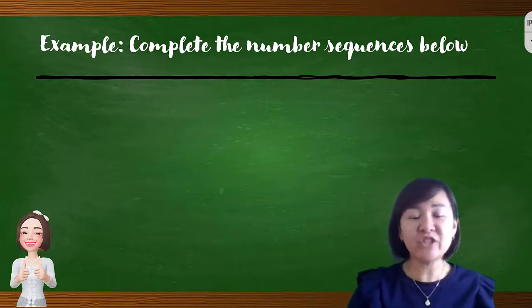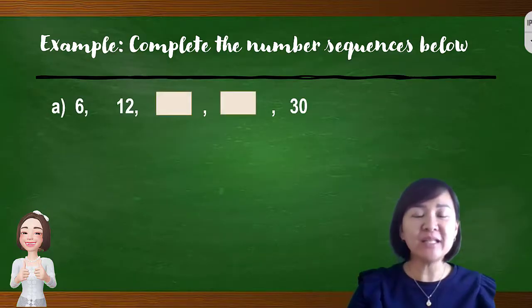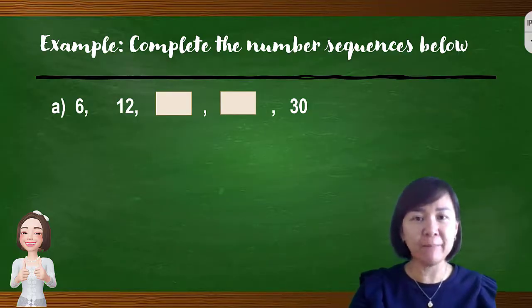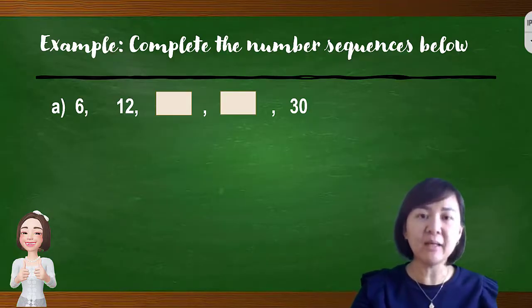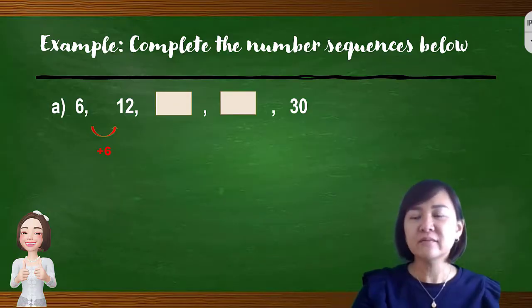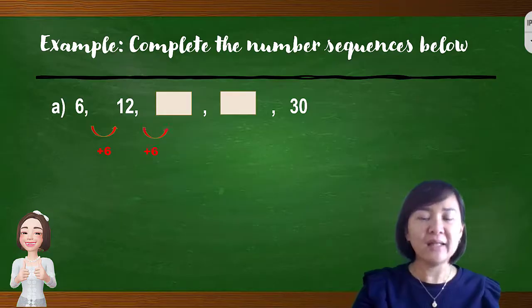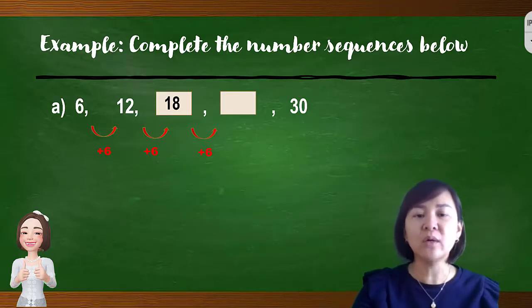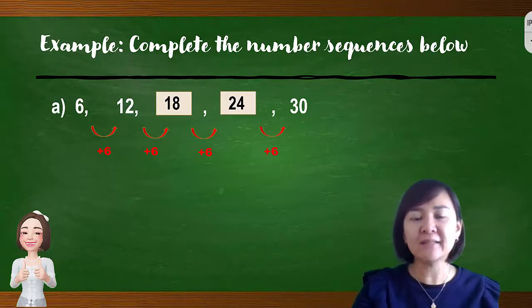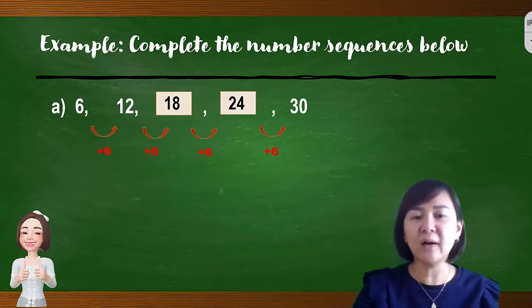Let's look at another type of question: complete the number sequence. We have to fill in the missing numbers. Before filling in the empty boxes, we need to identify the pattern first. From 6 to 12, the pattern is plus 6. So from 12, add 6 to get 18. Then 18 plus 6 equals 24. Double-checking with the last term: 24 plus 6 equals 30. Yes! Therefore this sequence is correct — adding 6 to each previous term.